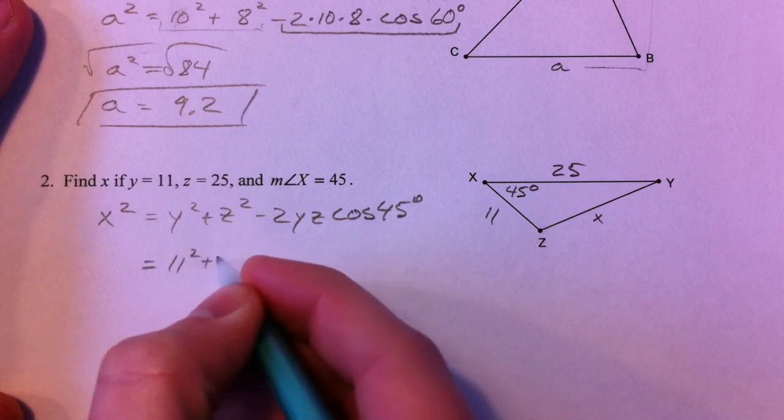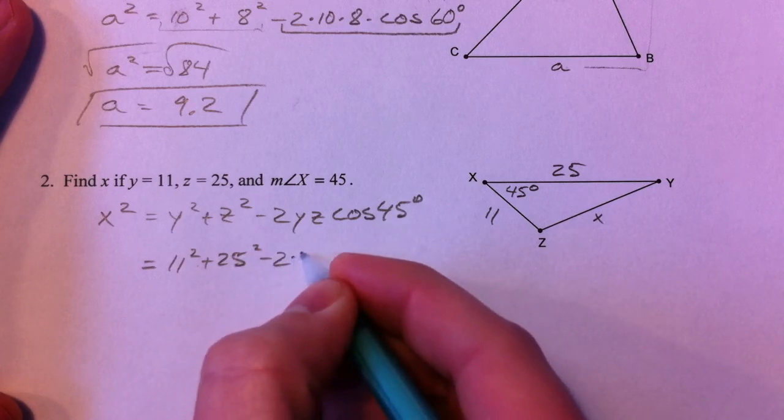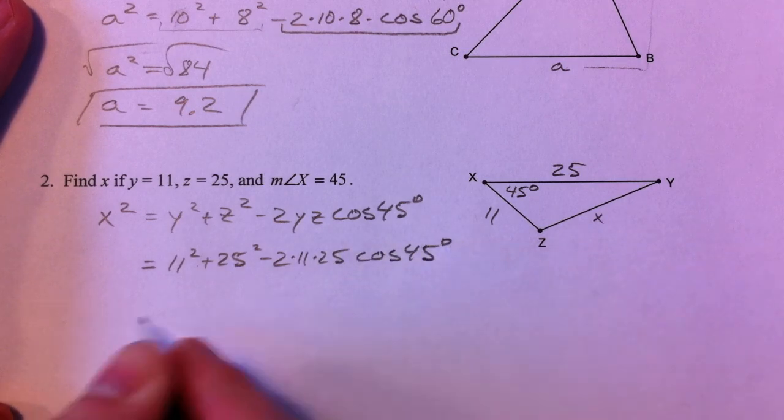y² plus z² minus 2 times y times z times the cosine of 45 degrees. 11² plus 25² minus 2 times 11 times 25 times the cosine of 45 degrees.